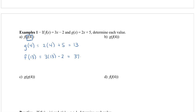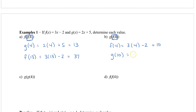Let's try another one. This time we're going to calculate g of f of 4, so we take the number 4 and put it in for x for the f function first. f of 4 equals 3 times 4 minus 2, which equals 10. So f of 4 is 10, and we replace it with 10. Then g of 10 equals 2 times 10 plus 5, which gives us 25. So that was f of g and g of f of 4.